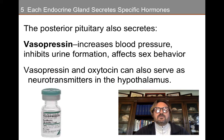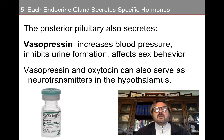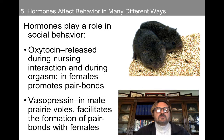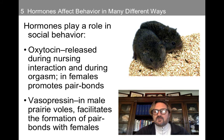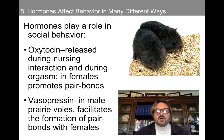For instance, we're going to talk about the voles — you have two different types of voles. One vole is polygamous, the other is monogamous. It seems like the behavior is regulated by vasopressin receptors. But vasopressin and oxytocin can also serve as neurotransmitters in the hypothalamus. So these hormones play a role in social behavior. Oxytocin is the other posterior pituitary hormone — it is released during nursing interaction and during orgasm in females and promotes pair bonds. Vasopressin is studied more in males, particularly these prairie voles, which have received a great deal of acclaim for their interesting behaviors. It facilitates the formation of pair bonds with females.